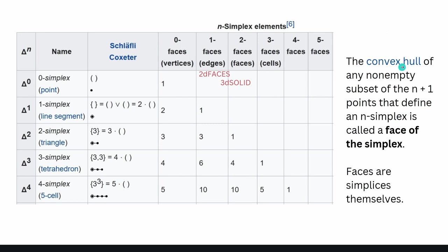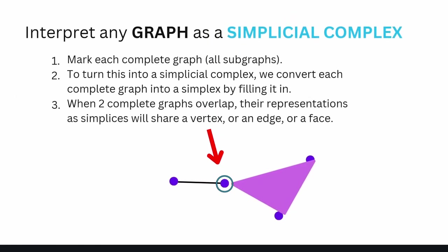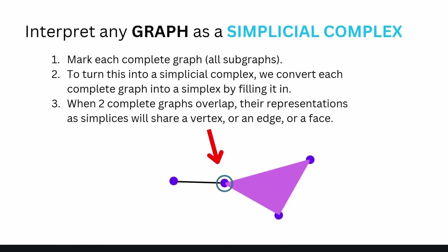The convex hull of any non-empty subset of the n+1 vertices that define an n-simplex is called a face of the simplex. Faces are simplices themselves by definition. The beautiful thing is now that we can interpret any graph as a simplicial complex with just three easy steps.